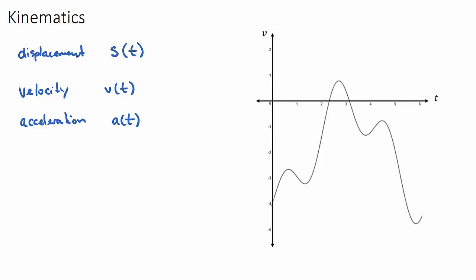Velocity is displacement over time, and acceleration is velocity over time. Velocity is very similar to speed, but the speed of something is distance over time, while velocity is displacement over time.